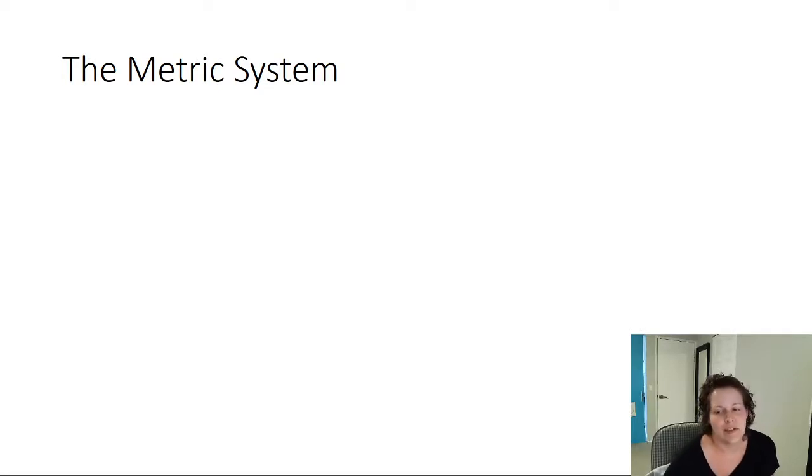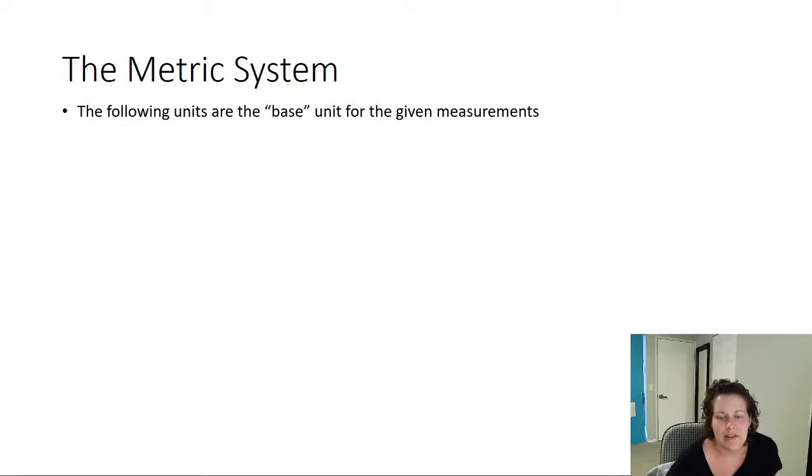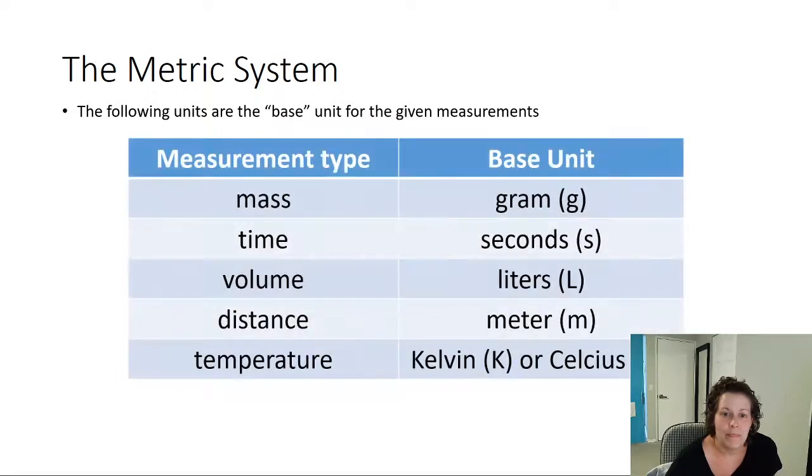But let's talk about the metric system. What is it? So the following units are the base units for the given measurements within the metric system. For mass, our base unit is going to be grams. Time, the base unit is seconds. Volume, the base unit is liters. Distance, the base unit is meters. And for temperature, there's actually two different base units, and that is Kelvin or degrees Celsius.